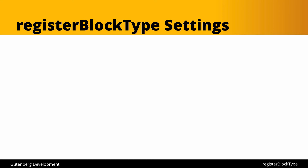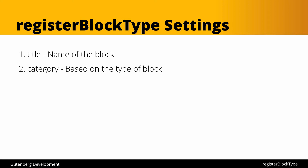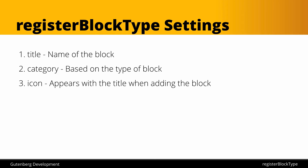The settings parameter for registerBlockType has a number of important properties. The first is 'title' — this is the human-readable name of our block, and we'll escape it so it can also be translated. This is what will appear in the UI when someone is searching for or adding our block. Then we have 'category' — there are a few predefined categories in WordPress for different types of blocks, such as embeds, layout, and common blocks. You choose from one of those, and your block will appear under that heading in the UI.